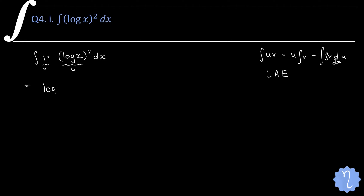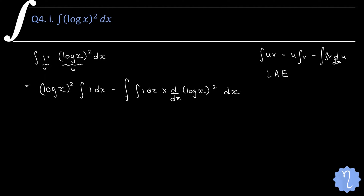So u is (log x)². Integration of 1 dx minus integration of 1 dx into derivative of u. Now the derivative — if we write something squared, we apply the composite function rule: it becomes 2 into log x, then the inside derivative, which is 1/x dx. This x gets cancelled.